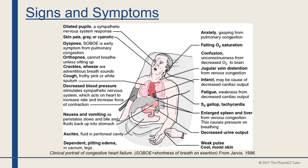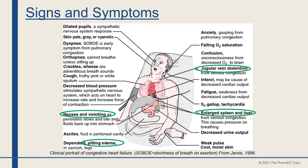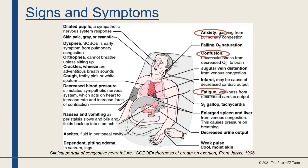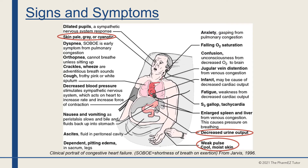Here's a diagram of a patient that shows many of the signs and symptoms of heart failure. He has dyspnea, orthopnea — he cannot breathe unless sitting up — cough, and a falling oxygen saturation. He has nausea and vomiting as peristalsis slows and bile and fluids back up into his stomach. He shows pitting edema, jugular vein distension, and an enlarged spleen and liver from venous congestion. He has anxiety, is gasping from pulmonary congestion, confused due to decreased oxygen to the brain, and fatigue. His skin is pale, gray, or cyanotic, with decreased urine output, a weak pulse, and cool, moist skin.